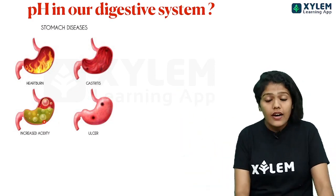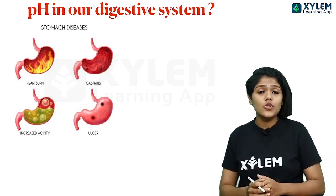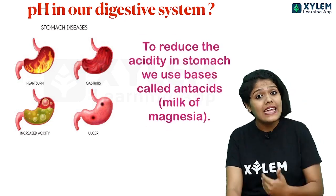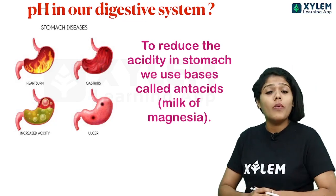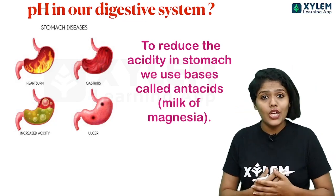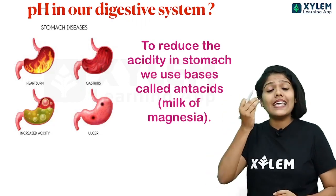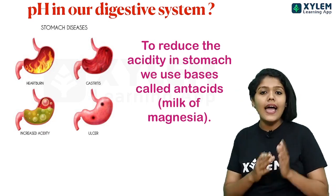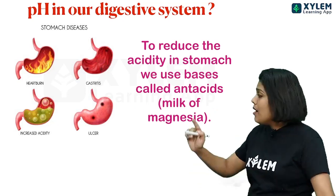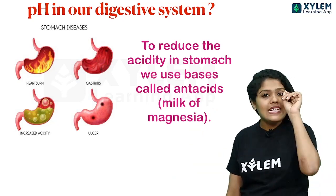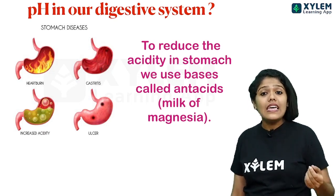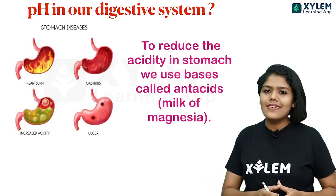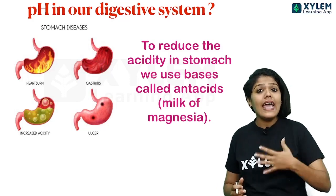Excess acidity in the stomach causes heartburn and gastritis. To reduce acidity, we use antacids. For example, milk of magnesia — magnesium hydroxide — is basic in nature and acts as an antacid. Other examples include antacid tablets and gelusil. These antacids neutralize the excess acid in the stomach.